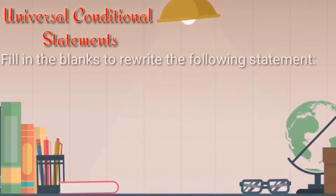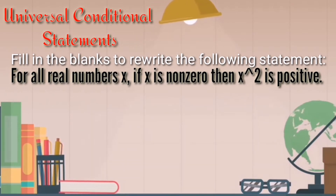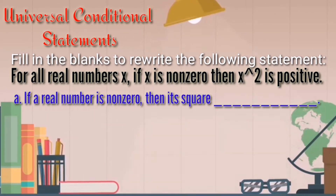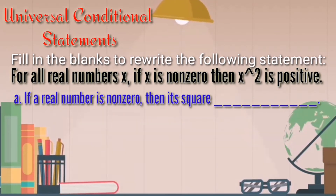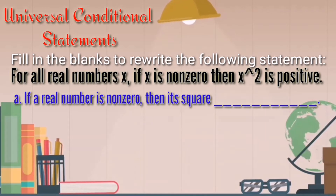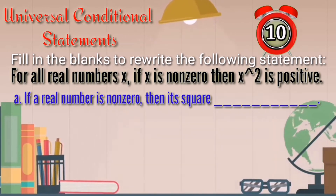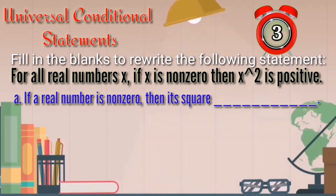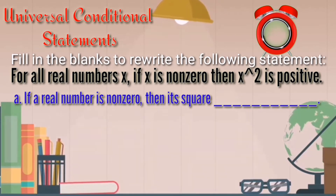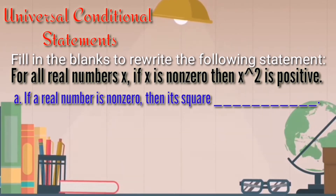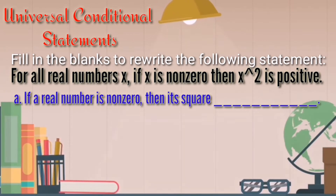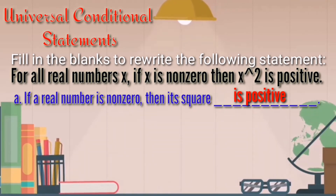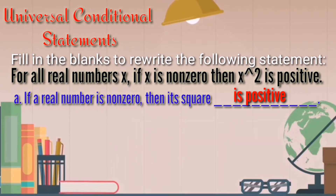Let's have an exercise. Fill in the blanks to rewrite the following statement: 'For all real numbers x, if x is non-zero, then x squared is positive.' Letter A: 'If a real number is non-zero, then its square is blank.' The answer is: 'If a real number is non-zero, then its square is positive.' The square of any non-zero number is positive.